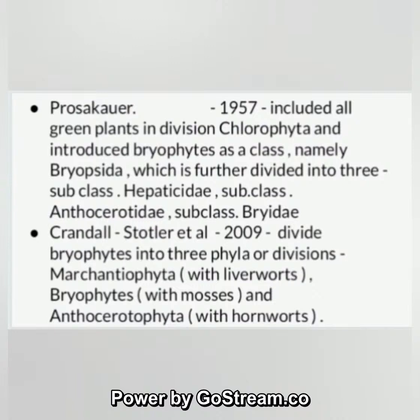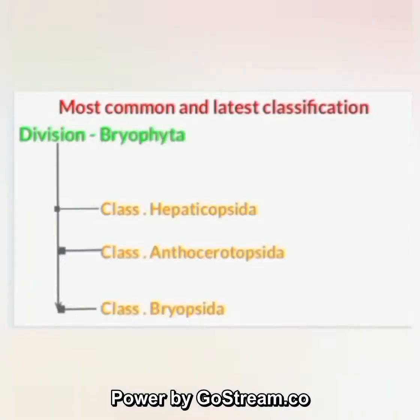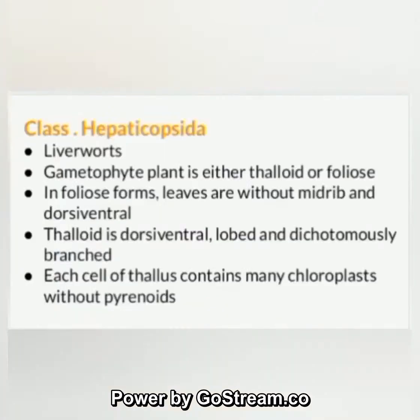Crandall-Stottler et al. 2009 divided bryophytes into three phyla or divisions: Marchantiophyta (liverworts), Bryophyta (mosses), and Anthocerotophyta (hornworts). The most common and latest classification: division Bryophyta with classes Hepaticopsida, Anthocerotopsida, and Bryopsida.